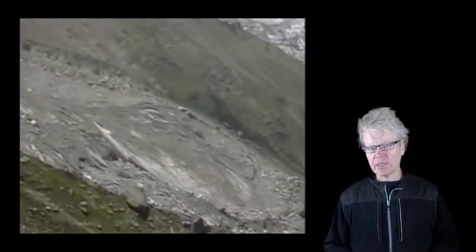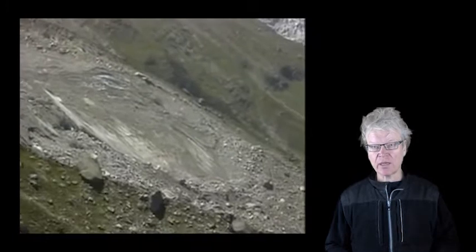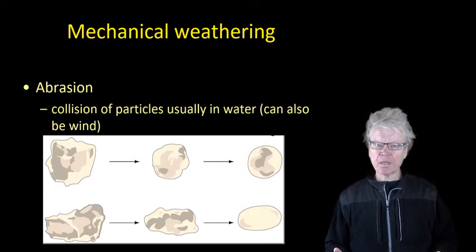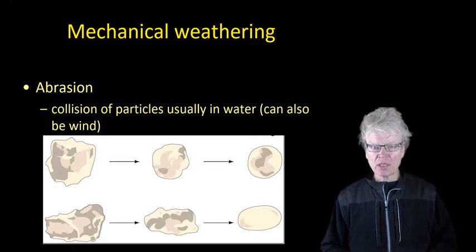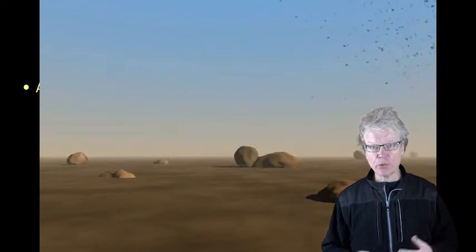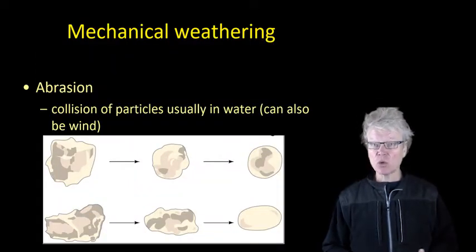You can often see frost wedging occurring in mountainous regions where you get frost overnight, forming what's known as a talus slope at the bottom of steep cliffs. Another type of mechanical weathering is abrasion, where you have the collision of particles either under water or by wind bashing into each other, filing off the sharp edges of particles - breaking them into smaller particles and changing their shape from more angular to more rounded.